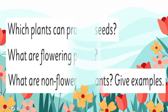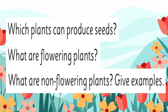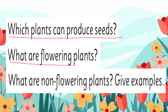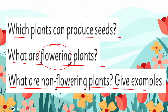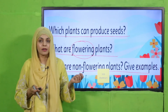Now is the time for evaluation. Which plants can produce seeds? Flowering plants can produce seeds. What are flowering plants? Plants which bear flowers are called flowering plants. What are non-flowering plants? Give examples. Plants which do not have flowers are non-flowering plants, and their examples are ferns, mosses, money plant, etc.